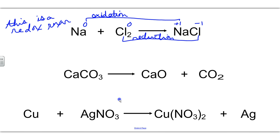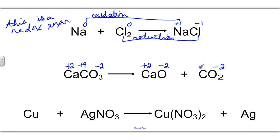Another example: calcium carbonate. We give calcium a plus two because it's in group two. We give oxygen a minus two. Two times three is negative six, so working backwards, carbon comes out to a plus four — plus four plus two gives positive six, and two times three gives negative six, and these cancel. On the products side, calcium is plus two, oxygen is minus two. Two times two is negative four, so carbon must be plus four. Calcium is plus two before and after, carbon is plus four before and after, and oxygen is negative two before and after. Nothing changed, therefore this is not a redox reaction.